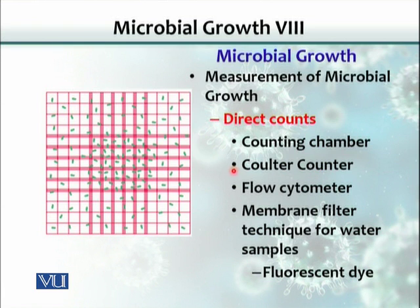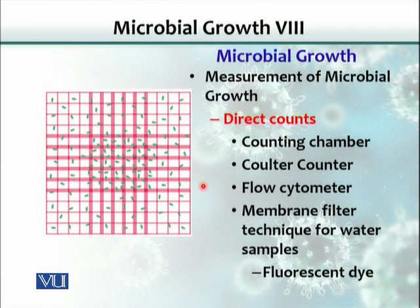The Coulter counter machine is also used for blood samples, counting RBCs and WBCs, and we can use that machine as well. There is another advanced version called a flow cytometer, so we can also electronically count the number of these organisms. Keep in mind that with this direct count, we do not care whether the bacteria are live or dead — we just count them.